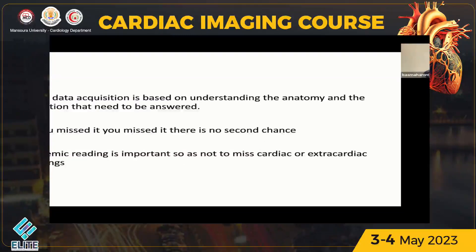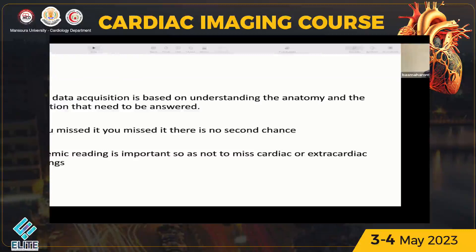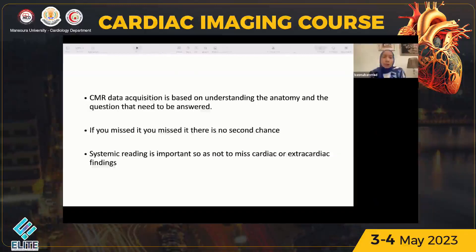So why is it important to understand anatomy and do a proper systemic reading? Because in CMR, the data acquisition is based on understanding the anatomy and the questions that need to be answered. And if you missed it, you missed it — there is no second chance to acquire more images or post-processing to get a different perspective or specific anatomical position. Systemic reading is important so as not to miss cardiac or extra-cardiac findings.